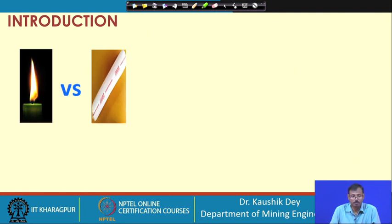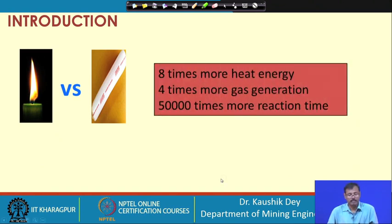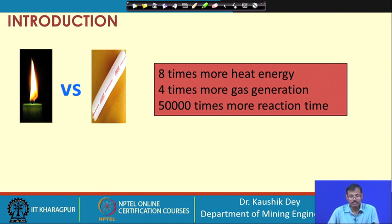If you go through the next slide it will be more clear to you. See, there is a candle on the left side and there is an explosive cartridge on the right side. Suppose you take 100 grams of candle and 100 grams of explosive and want to see which one is more dangerous and how much energy they are releasing. If you compare their explosive reactions - how much heat is generated, how much gas is generated from each - you will find that the candle is generating 8 times more heat energy than an explosive of similar weight.